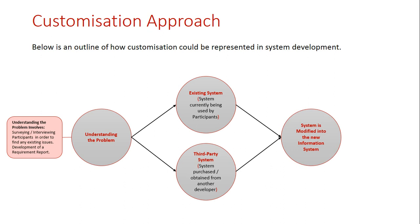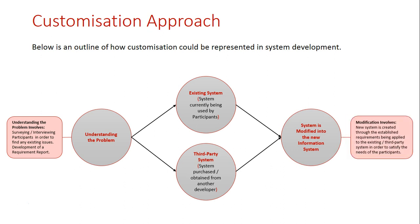Once they have made that decision and have a base information system, they then have to customize that system — the system is modified into the new information system. They apply the requirements found in the 'understand the problem' stage to either the existing system or the third-party system they've purchased, in order to meet the needs of the participants. This is how the customization approach works in system development.